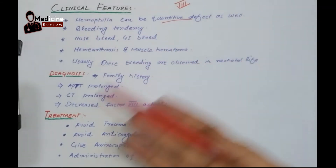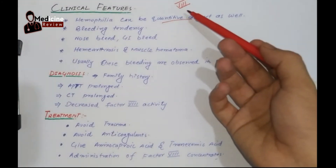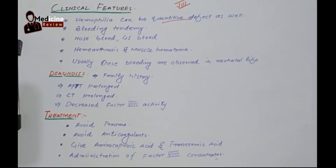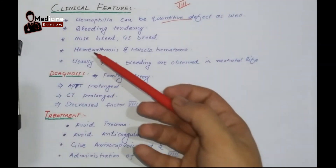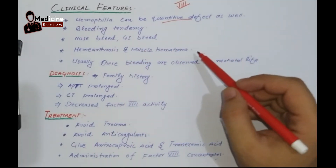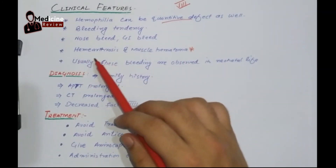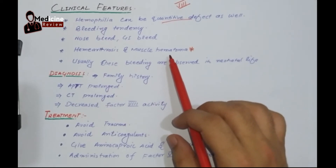Because, as we discussed earlier, if a minor injury happens, since factor 8 is deficient, there will be no completion of the cascade, so there will not be a secondary clot. This is called coagulopathy. There will be nosebleed and GI bleed. But the most important features to remember in hemophilia are blood in the joints — called hemarthrosis — and muscle hematoma.